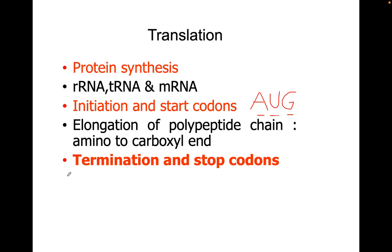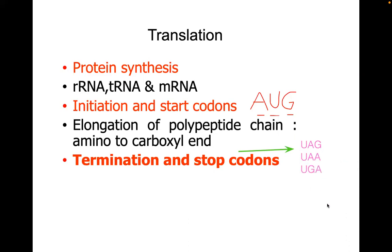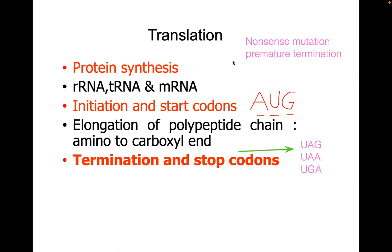The initiation or start codon is AUG. There are also termination and stop codons. The three stop codons are UAG, UAA, and UGA. If there is a mutation involving the stop codons, this is called a nonsense mutation — remember: 'stop talking nonsense.'